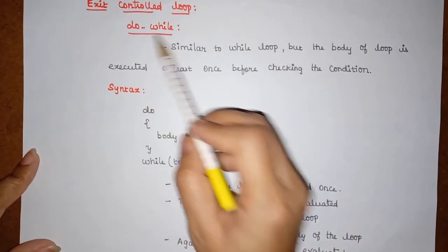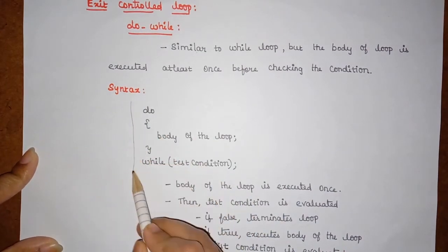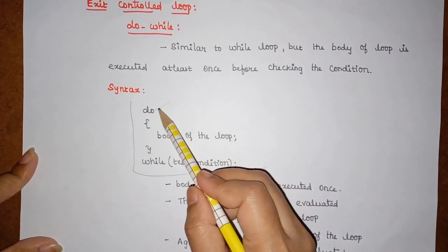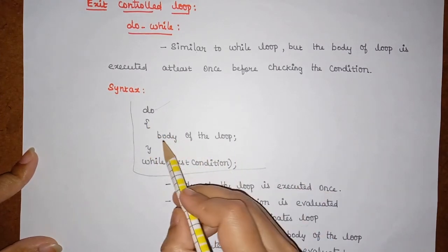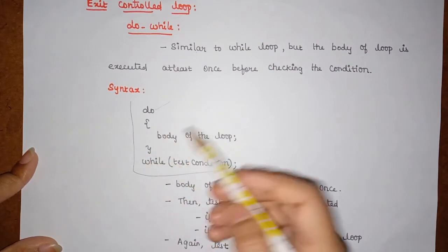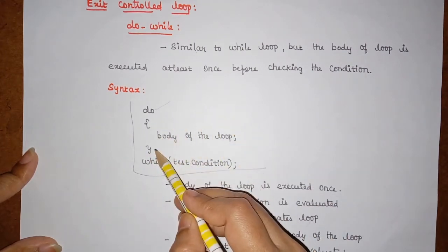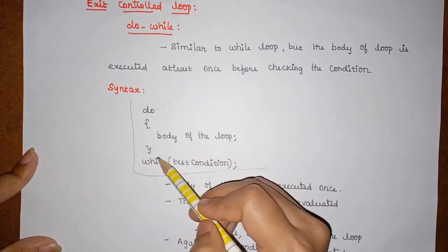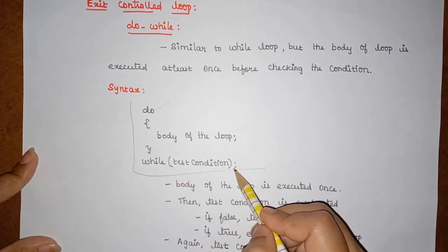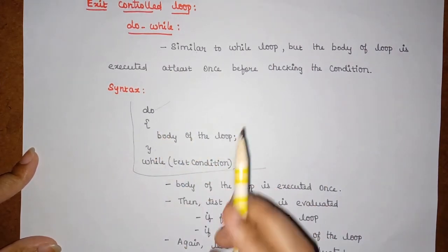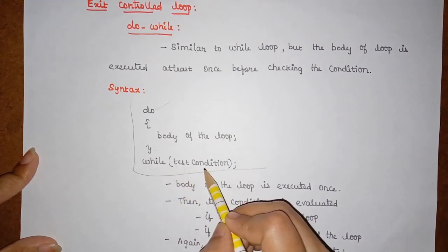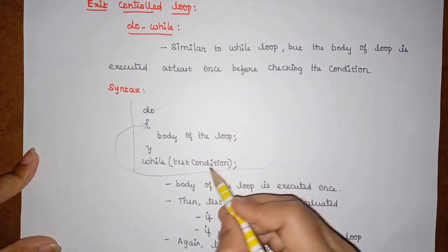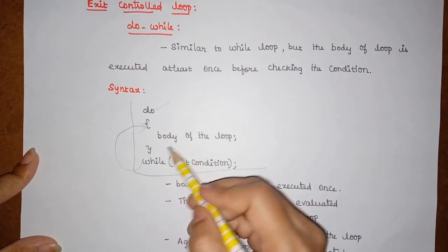This is the syntax for do-while. It starts with the keyword 'do', followed by the body of the loop — the statements inside the do block. After the body, we have the condition written inside 'while', which is why it is called do-while. After executing the loop once, it checks this condition. If true, the body executes again; if false, execution stops.